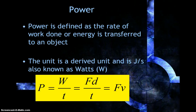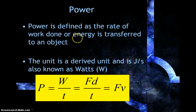Power is defined as the rate at which work is done or energy is transferred to an object. This is also a derived unit. Whenever you see the rate of something being done, it's that over time. So, this would be work or energy over time.